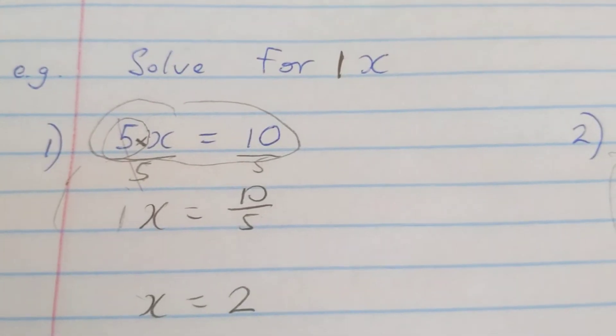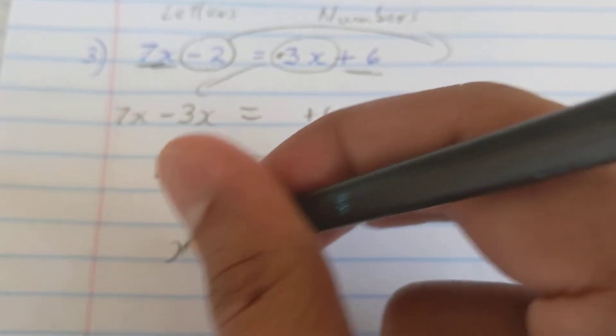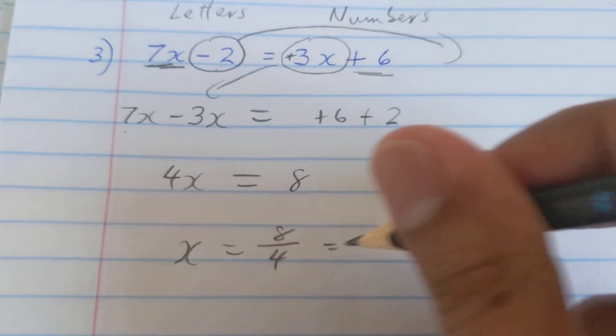Now I reach 4x equal to 8. And again, whichever method you want to use to solve it, 4 goes into 8, divide both sides by 4, so my final answer gonna be 2. Now let's look at this one.